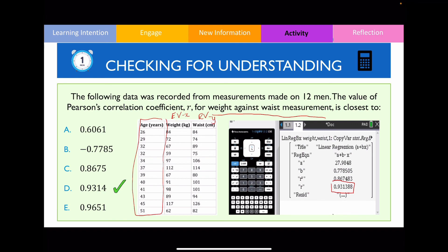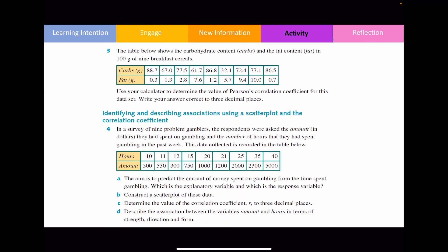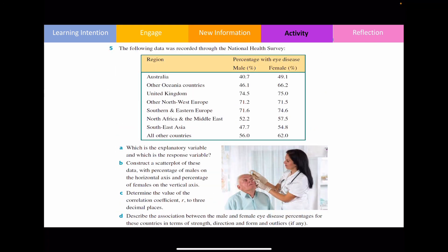I'm hoping by now you're fairly confident at finding Pearson's correlation coefficient using the CAS calculator. What I'd like you to do now is to please answer all questions from exercise 7e to get further practice. This is the end of the video. Thank you guys for watching and I'll see you guys again in the next one. Bye!